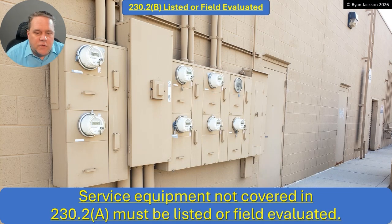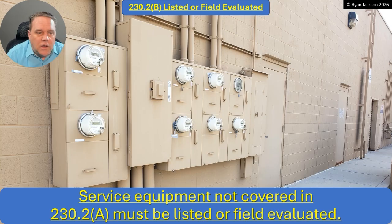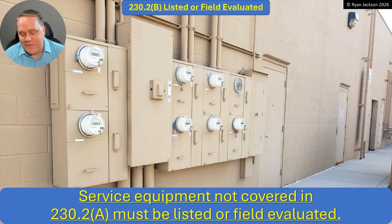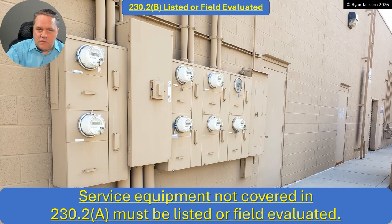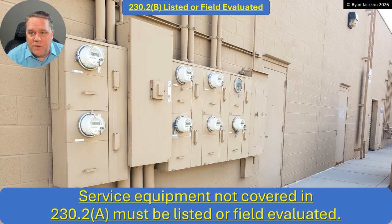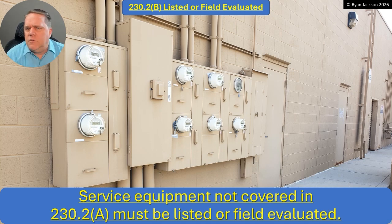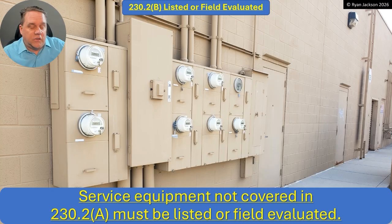Item B: listed or field evaluated. Service equipment that's not covered in 230.2A must be either listed or field evaluated. I relied on — or rather enforced — this one time as an inspector. We had an installation where the whole thing was just a bunch of motors. They installed a motor control center as the equipment, with a utility service CT can going right into the MCC. Most motor control centers are not listed as service equipment because that's a pretty unusual application — usually you're going to have a switchboard, a panel board, maybe even switchgear if it's industrial. So I did the inspection, and it was not listed as suitable for use as service equipment.